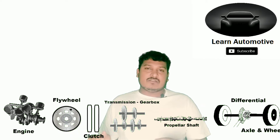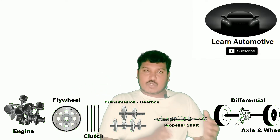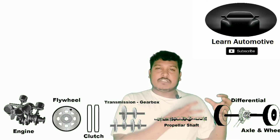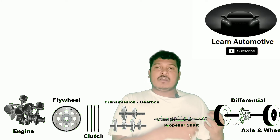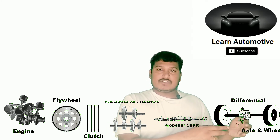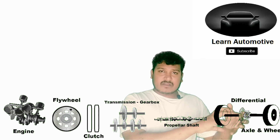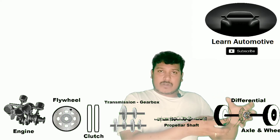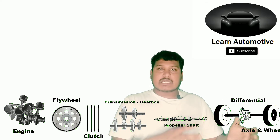The transmission is simply a gear. After the transmission, the propeller shaft has a linear motion which is connected to the differential. The main role of the differential is to convert the linear motion into circular motion. The axle is connected there, and the axle will make the wheel rotate. As the wheel is connected to the axle and it starts to rotate, the car moves.